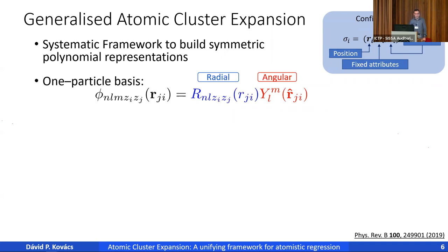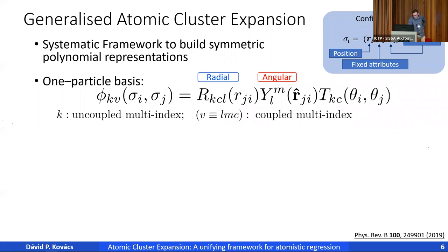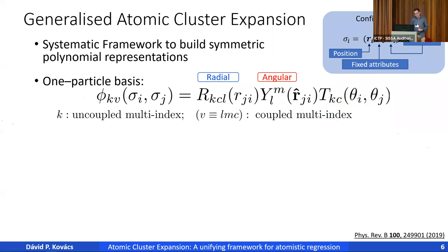We want to generalize this because as-is it wouldn't fit well with a neural network, so we came up with a generalized one-particle basis. It still keeps the radial part on distances and the angular part, but adds a function t_kc — everything that is not radial and angular — which describes dependence on, for example, chemical elements. This allows generalizing the one-particle basis from species indices to continuous embeddings as in neural networks. There are two indices, k and c, giving us freedom to collect different indices into either k or c.